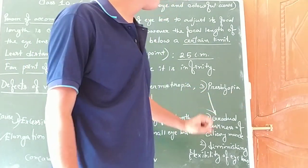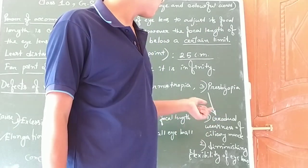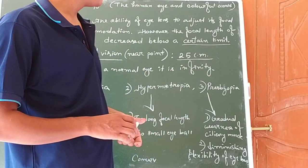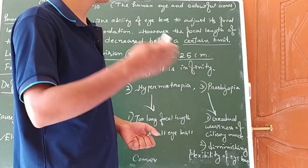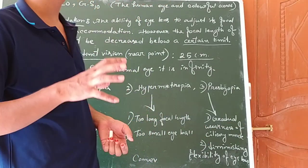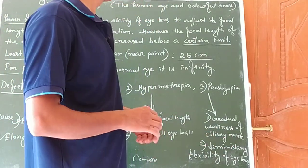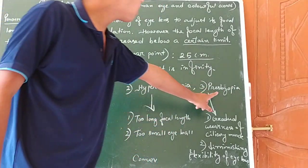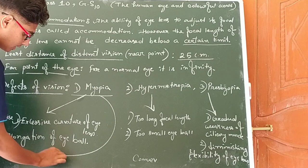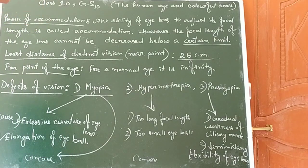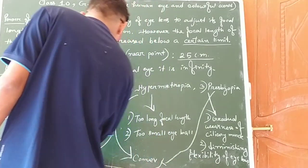What is presbyopia? Presbyopia is a defect of vision that occurs when a person's age increases. The cause is the gradual weakness of the ciliary muscles as the person grows older, and the diminishing flexibility of the lens. The lens normally can decrease or increase in flexibility, but when this diminishes, the defect occurs in the human eye. We can cure a myopic eye using a concave lens, a hypermetropic eye using a convex lens, and a presbyopic eye using both a convex lens and a concave lens.